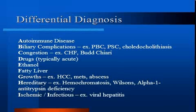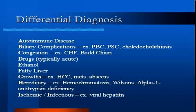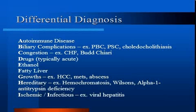Ischemic damage to the liver may be seen in patients who have had a prolonged period of systemic hypotension, such as following a cardiac arrest. Striking increases in serum aminotransferases exceeding 1,000 international units per liter and lactate may be seen. The hepatitis viruses are a common cause of liver injury, and everyone who presents with abnormal liver enzymes should be assessed for viral hepatitis, since we can easily diagnose it and treatment is available.